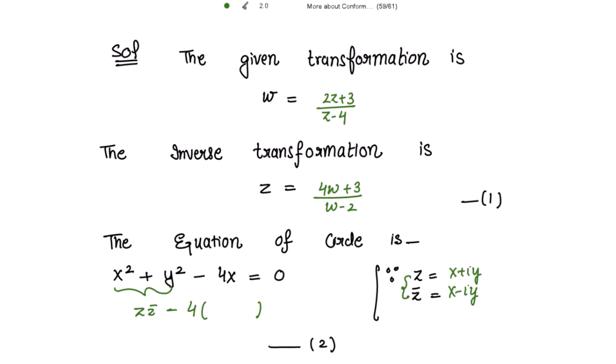Now if I add z and z̄, I get z plus z̄ equals 2x, so I can get the value of x as z plus z̄ divided by 2. So the value of x is z plus z̄ over 2, writing here the value for x. Cancelling this.